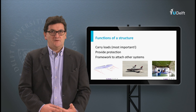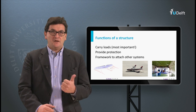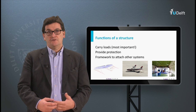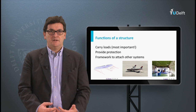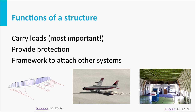Aircraft also have a structure, with the same functions. Their structures carry the loads, protect the payload, and serve as a framework to attach other systems to. The picture on the left shows a glider with the lift distribution acting on the wing. The structural elements in that wing will carry these loads and pass them on to the centre of gravity of the plane to make equilibrium.